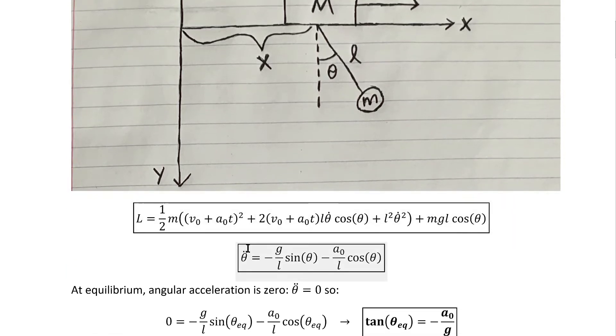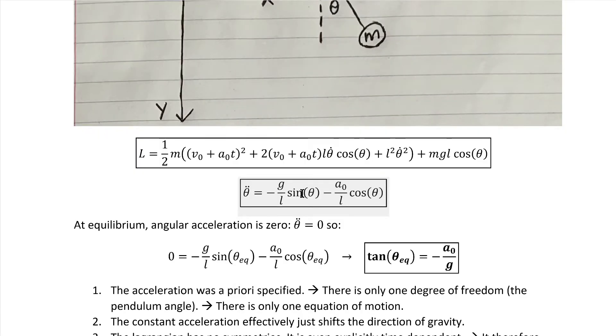The Lagrangian was this, and the equations of motion worked out to be this. Then we used this equation of motion to calculate the equilibrium angle, or rather the tangent of it.